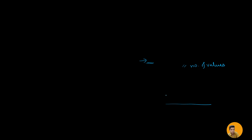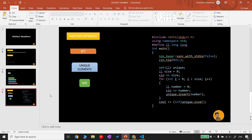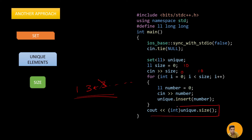We get the number of values for the list, loop through them, and keep inserting each number from the user into the set. For example with size 10, values like 1 and 3 get inserted, but when 3 appears again, since a set stores only unique elements it won't be inserted again. We keep doing this — the set stores unique values — and then we display the size of the set, which gives the number of distinct values.